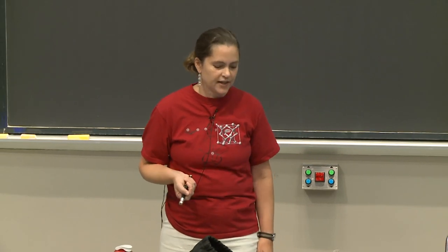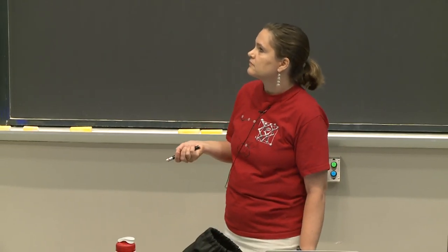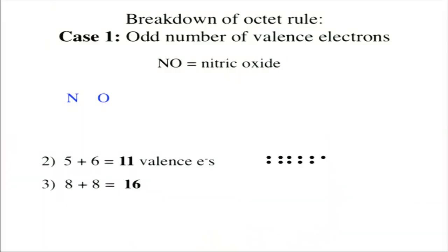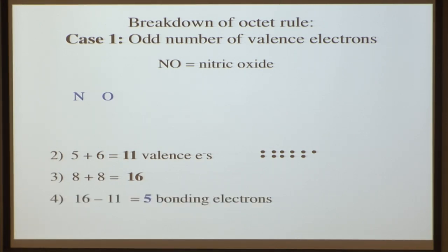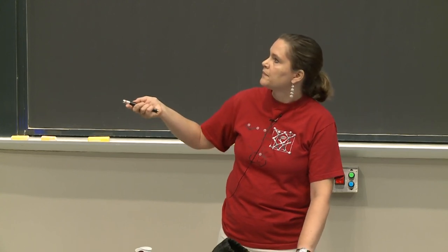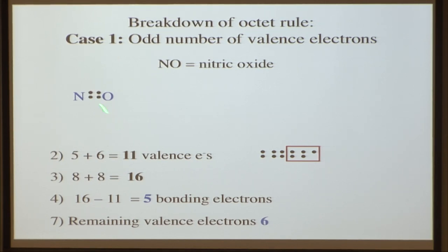Let's do a Lewis structure for nitric oxide and see this radical species. We need an odd number of valence electrons for it to be a radical. Nitrogen has five valence electrons and oxygen has six, so overall we have 11. To have complete octets, nitrogen needs eight and oxygen needs eight, so we need 16. That gives us five bonding electrons — 16 minus 11 — making it a radical species. We put four bonding electrons in between as a double bond, but the fifth is why it's a radical. We have six remaining valence electrons that we distribute as lone pairs around the atoms.